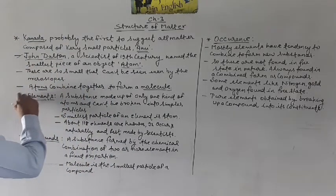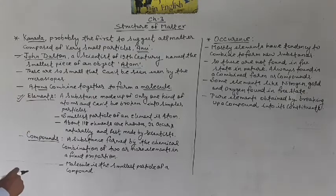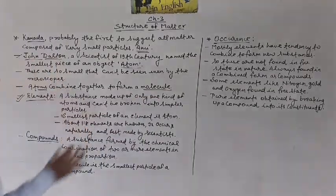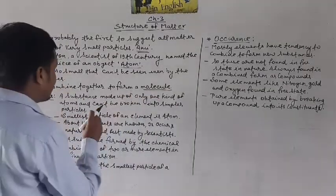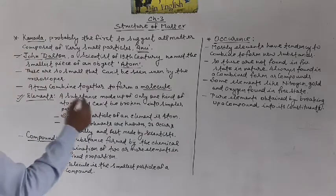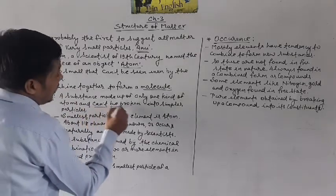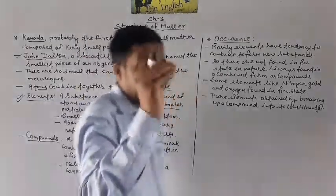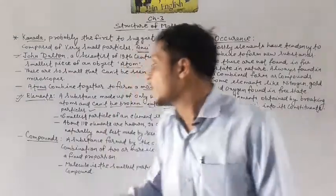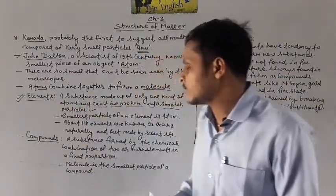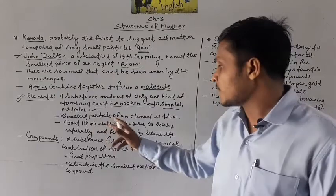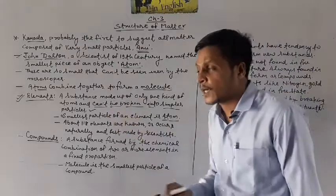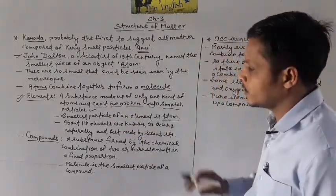Let's see about elements. Elements kya hote hain? A substance made up of only one kind of atoms — substances jo ki ek type ke hi atom se bane hue hain — and can't be broken into simpler particles. We call them elements. Smallest particle of an element is atom.